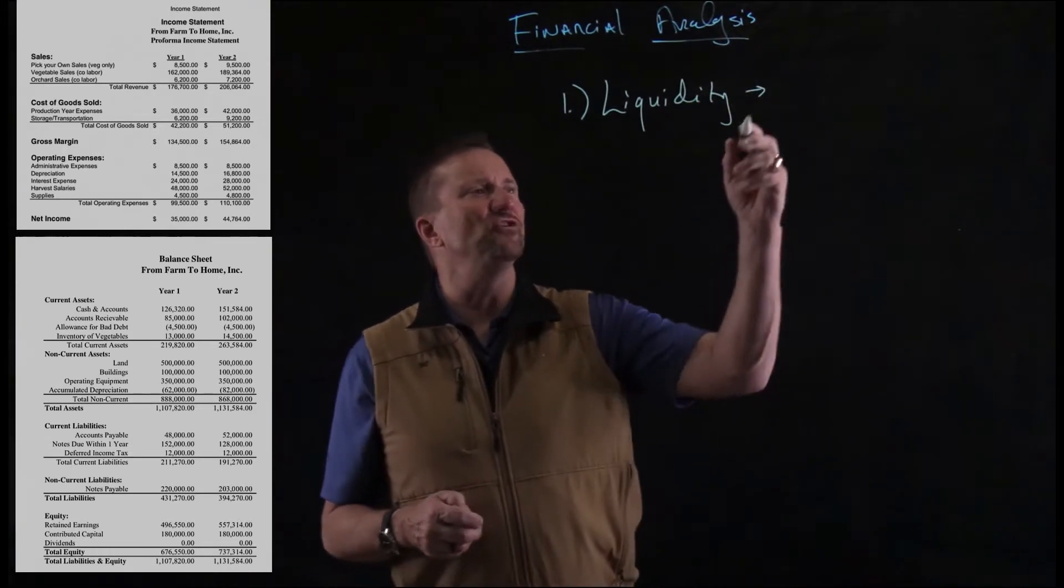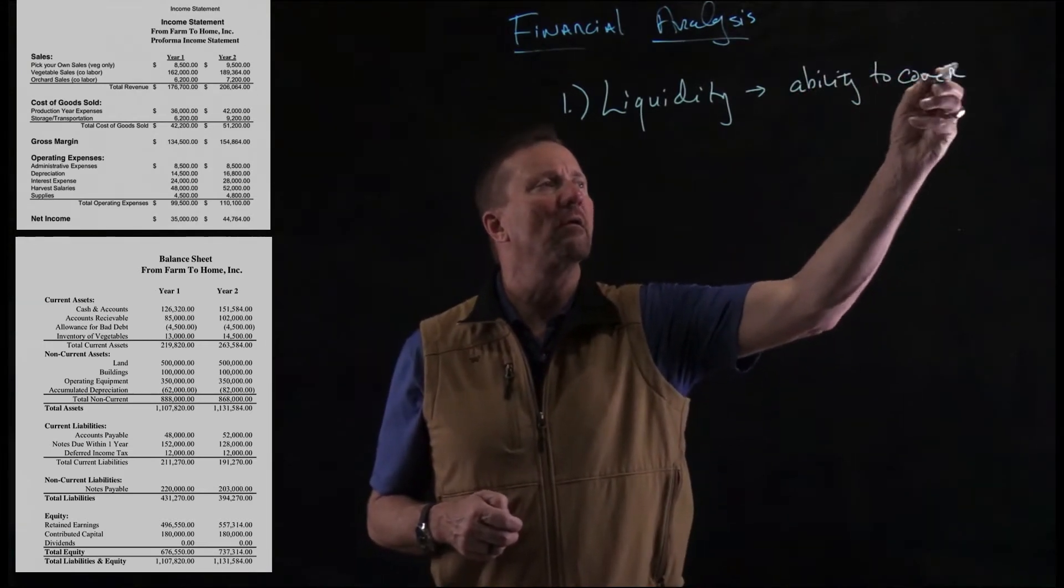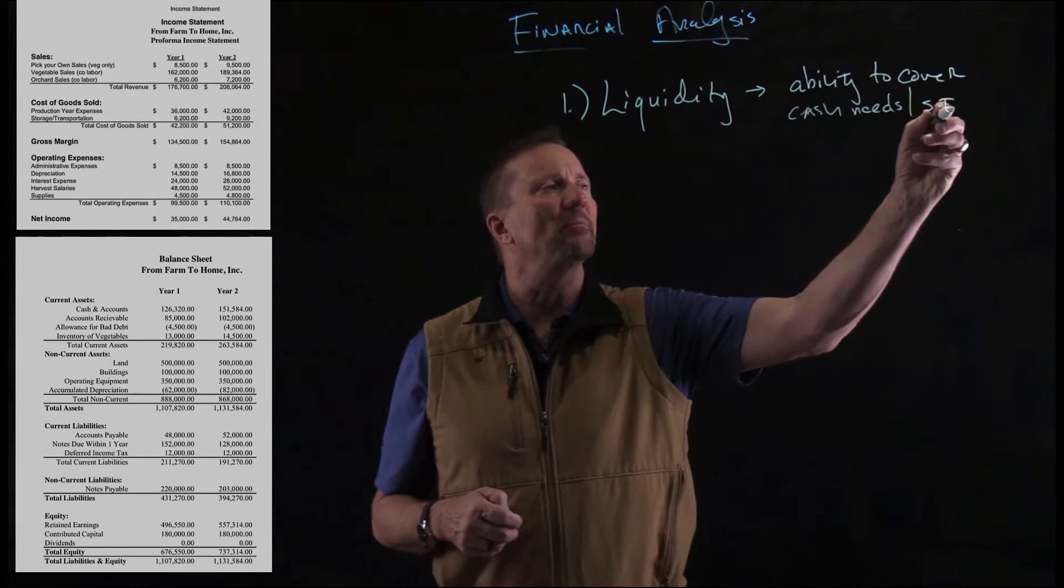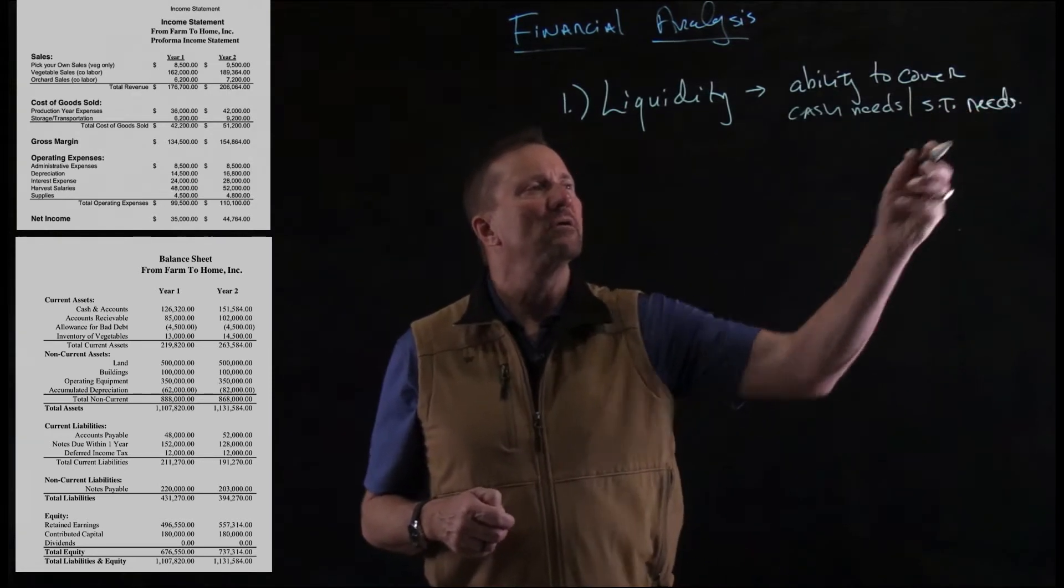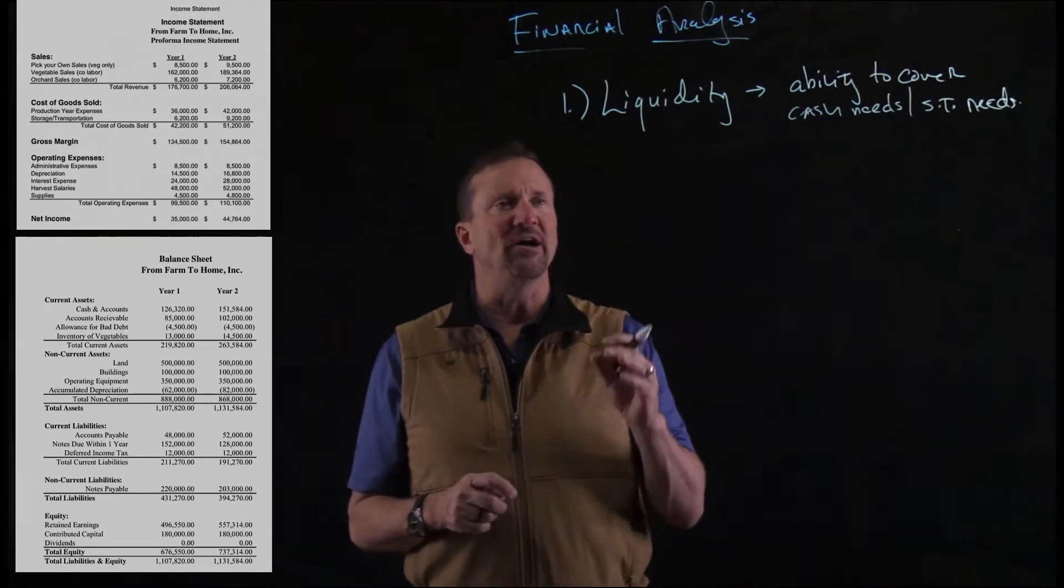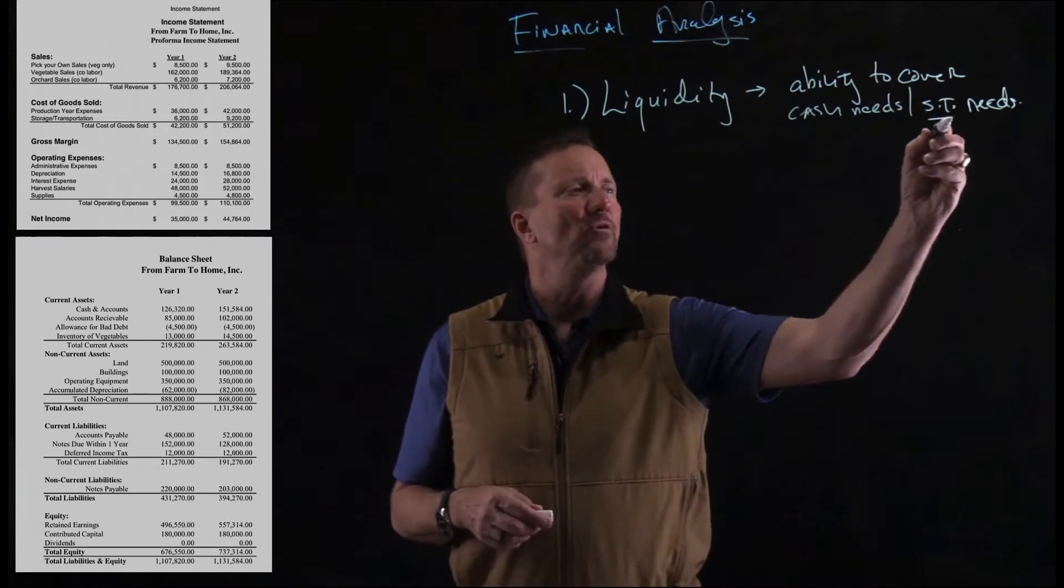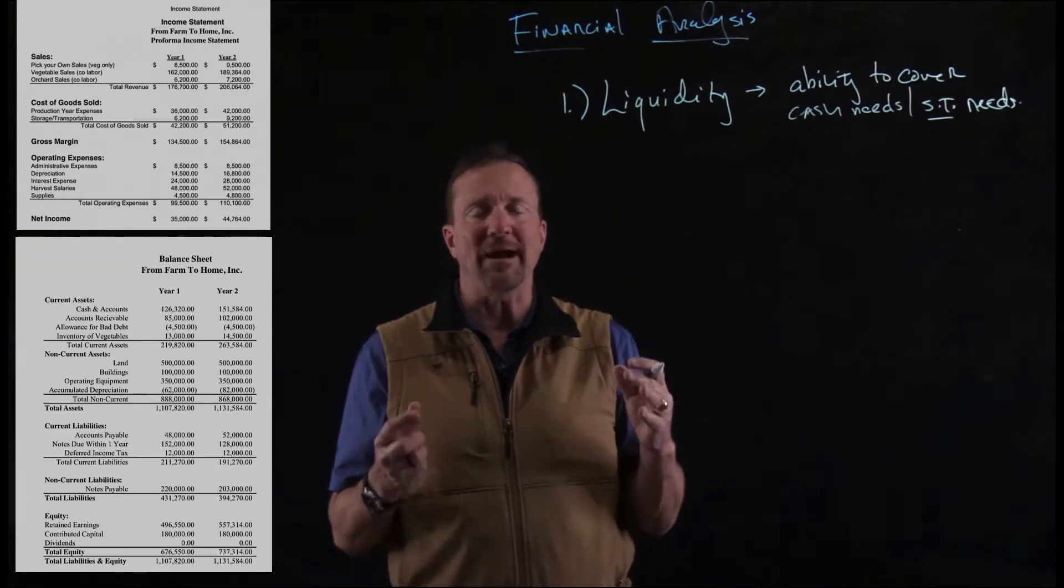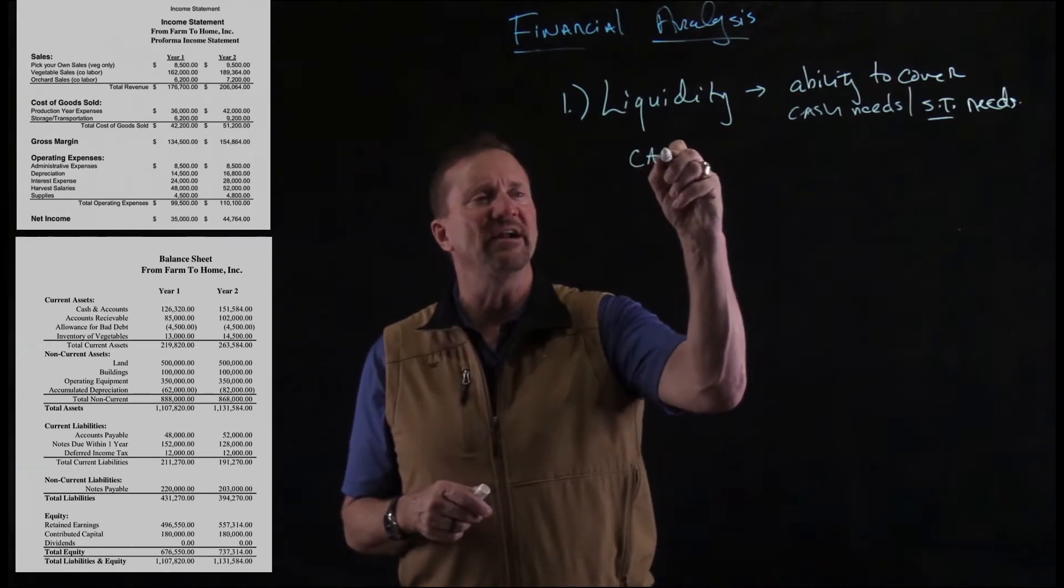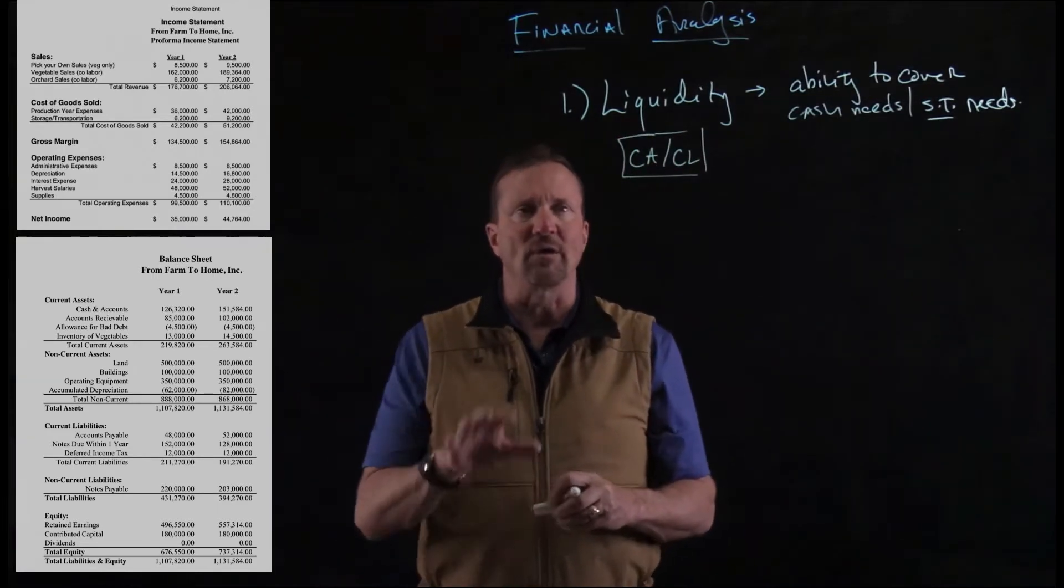Now liquidity is the ability to cover cash needs or short-term needs. And so it's our ability to cover our cash needs. Now that's going to be true of things like liabilities. So the debts that we owe short-term, which is current, is comparing how able we are to cover those short-term needs. And so really liquidity is just a definition of current asset divided by current liabilities. And that is our formula for liquidity.